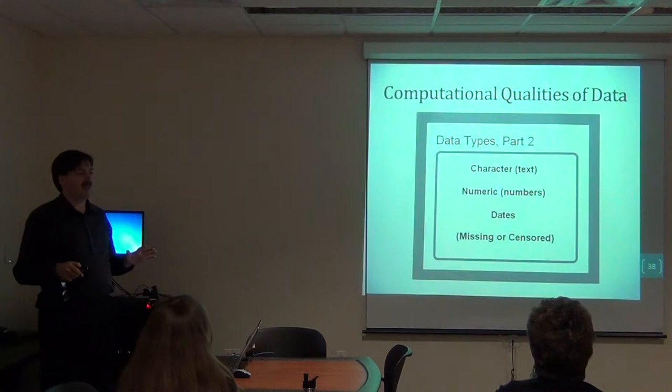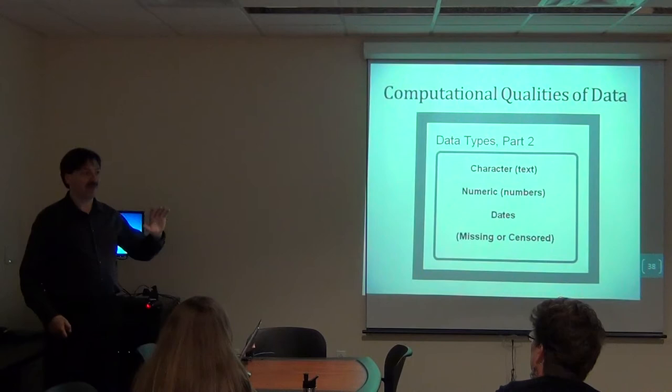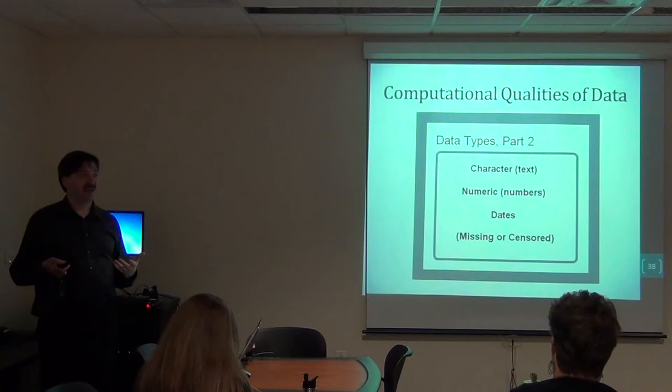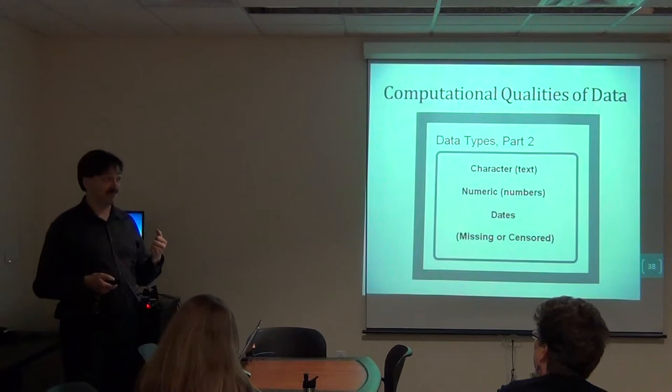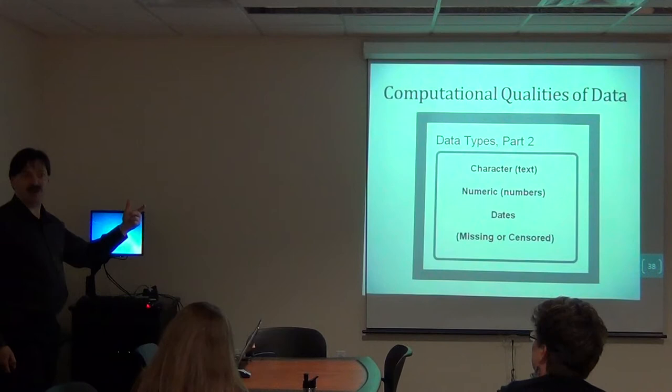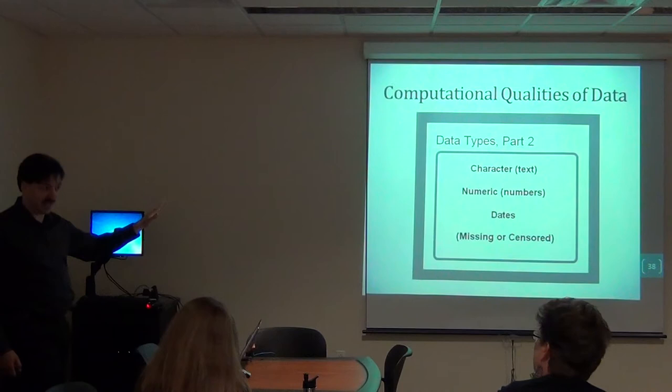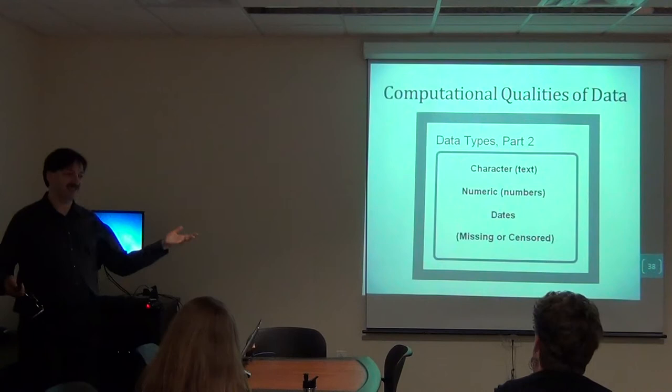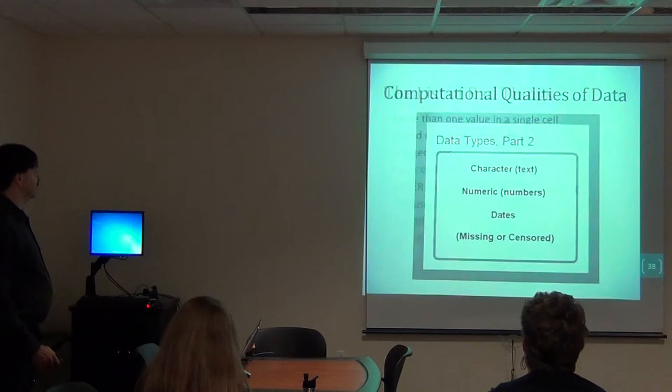Sometimes data can be missing. If you're entering data and have a partially entered dataset, it can be important to put in a value for things you looked for but weren't there. When you come back to check or correct things, it's important to know whether you've looked for it and it wasn't there, or if you just haven't tried to put it there yet. So sometimes putting in a specific value — if it's age, put in negative 99, something that wouldn't ever be used for an age — marks that you've looked for it but it wasn't there.